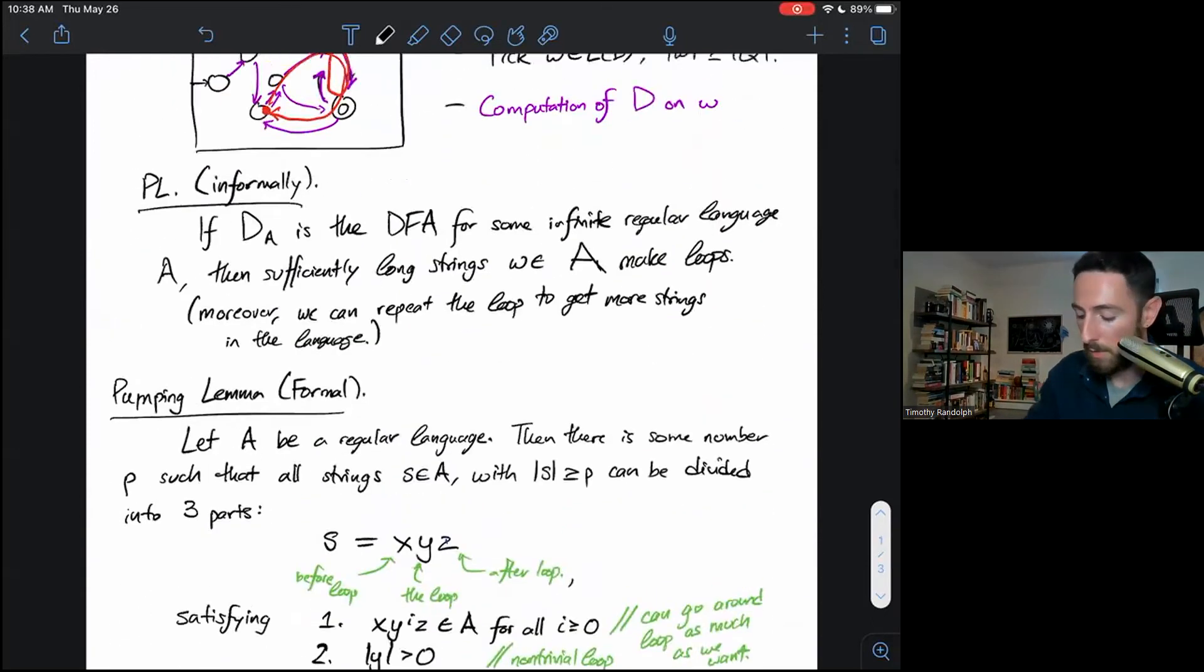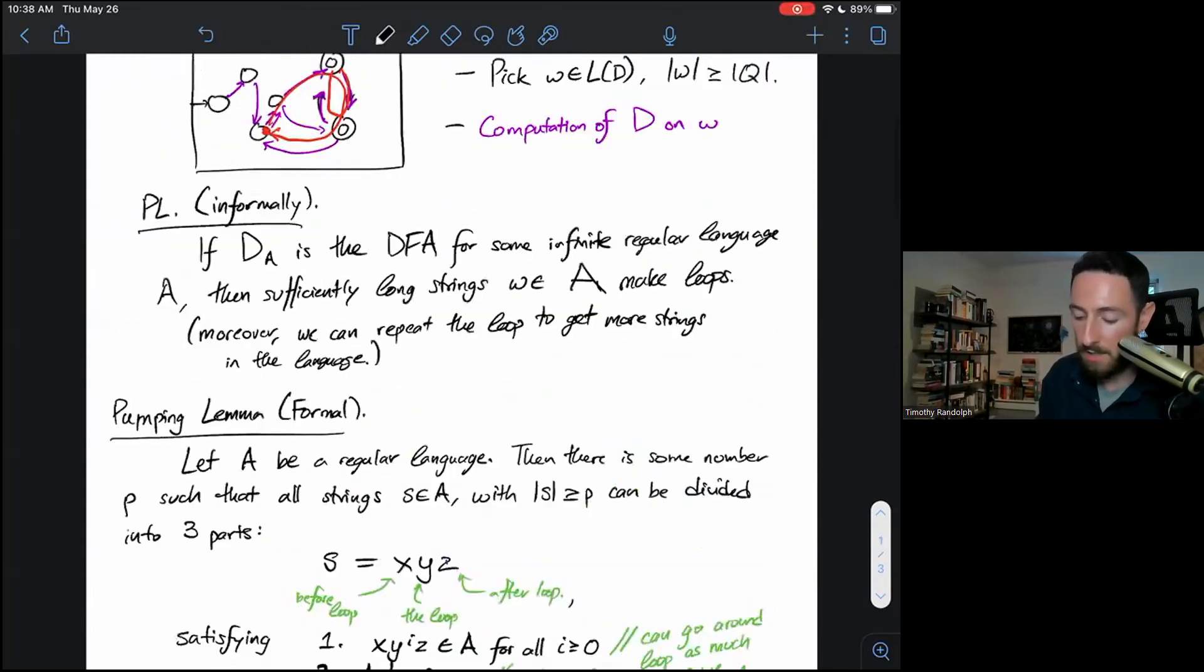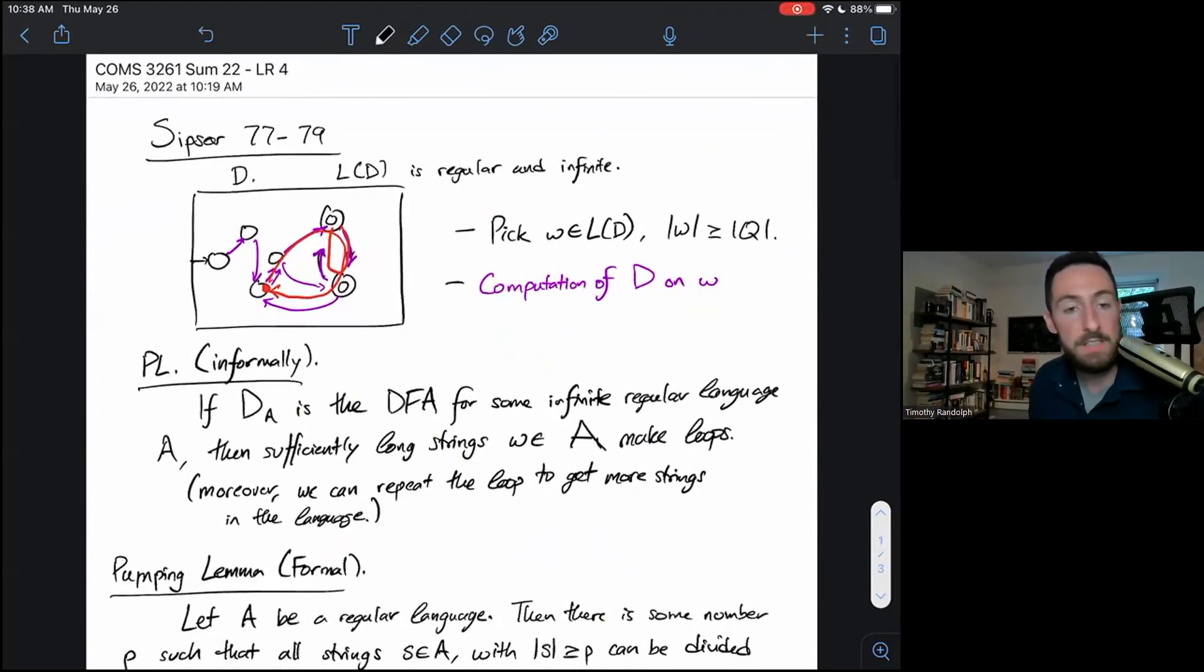If you'd like to see the formal proof, well, in my mind, this is a formal proof. But if you'd like to see it written out in a slightly different way, go back and check out Sipser pages 77 to 79. Thanks for watching the video. If you want examples of how to use the pumping lemma to prove that strings are, sorry, to prove that languages are non-regular, go forward to the next example video in the sequence. Thanks for watching. See you in class.